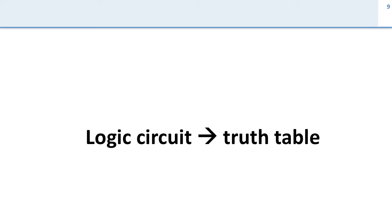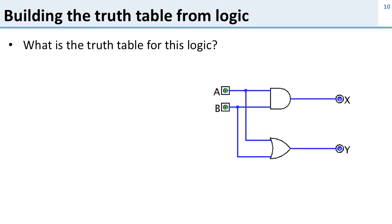So now we're going to talk about how you take a logic circuit and figure out what the truth table for that circuit is. Here's the logic circuit we have, has two inputs A and B and two outputs X and Y, and we want to figure out how it works.